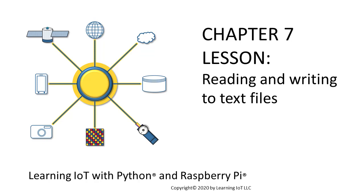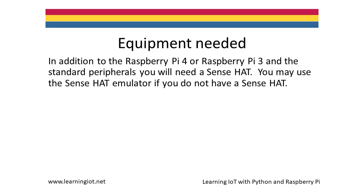This video accompanies Learning IoT with Python and Raspberry Pi. In this video, you will learn how to read from and write to a text file. In addition to a Raspberry Pi 4 or 3 and the usual peripherals — that is to say a keyboard, a mouse, and a monitor — you will also need a SenseHat. You may also use a SenseHat emulator if you do not have an actual SenseHat device.